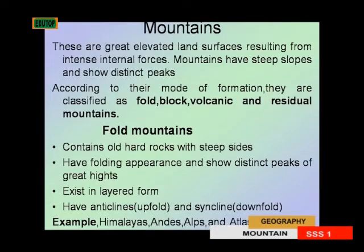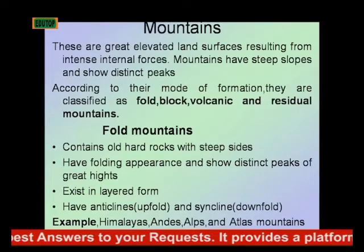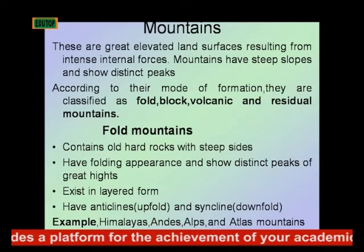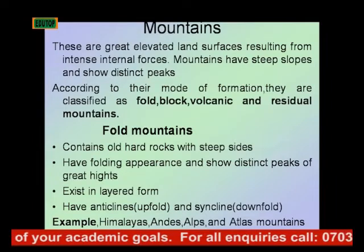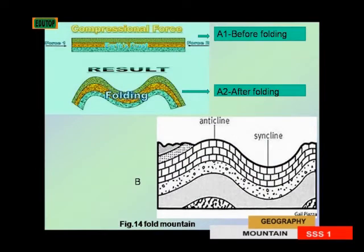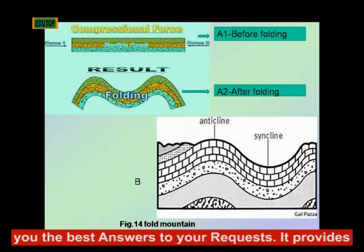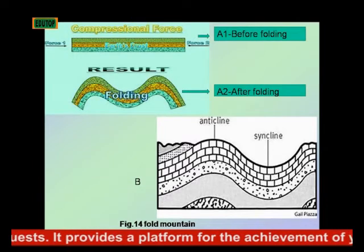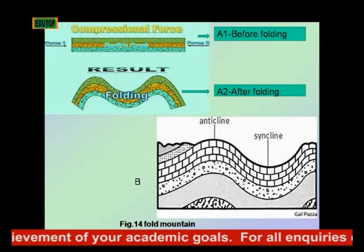Fold mountains contain old hard rocks with steep sides. They also exist in layered form. They have what we call anticlines and synclines. We will use a diagram here to illustrate what we mean by anticlines and synclines. Examples of fold mountains include the Himalayas, the Andes, the Alps, and the Atlas Mountains. This figure shows what a fold mountain looks like.